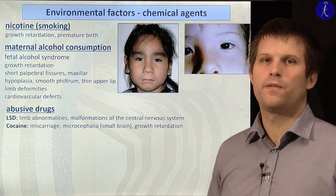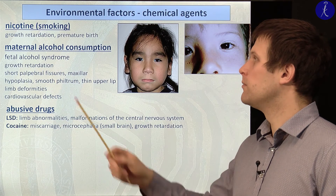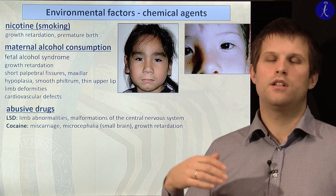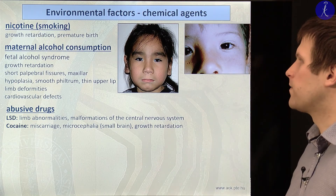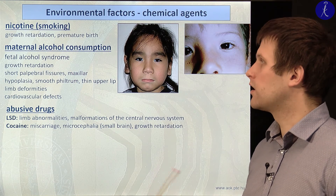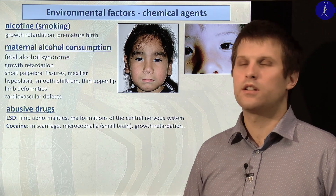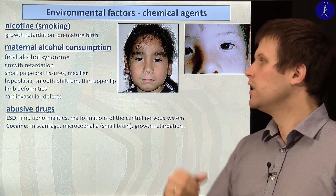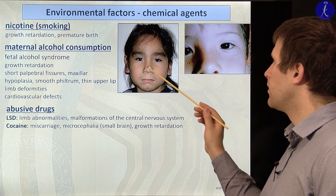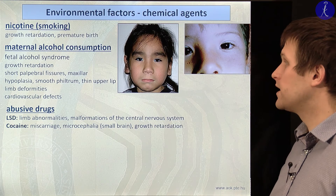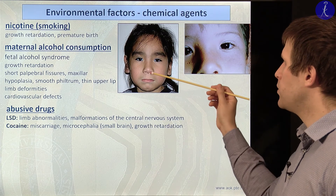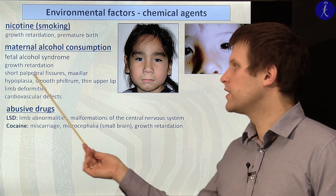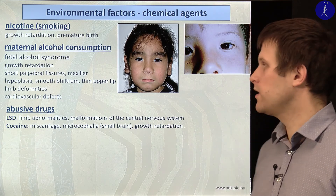Other environmental factors such as nicotine, maternal alcohol consumption, and abusive drugs can result in disruption and malformations. Especially with alcohol consumption, we see retardation, short palpebral fissures, smaller maxilla, relatively long philtrum, thin upper lip, and association with limb deformities and cardiovascular defects.